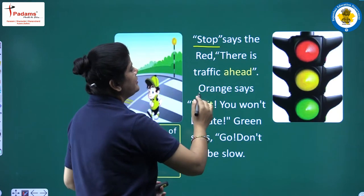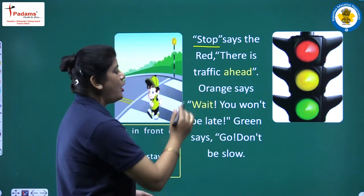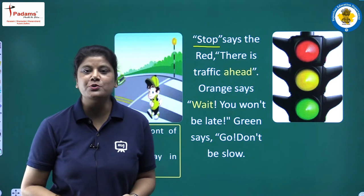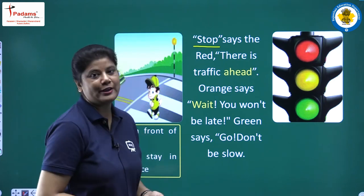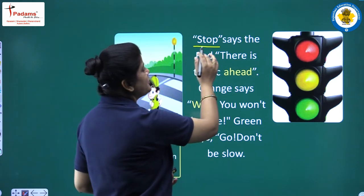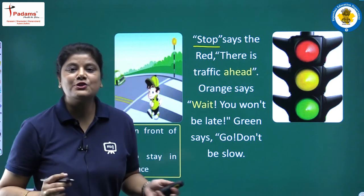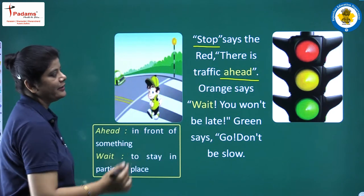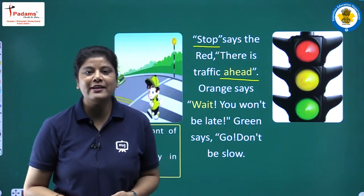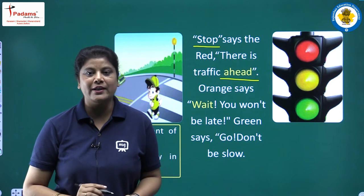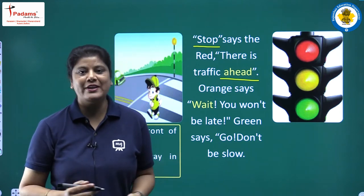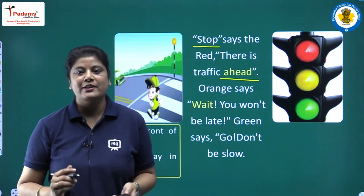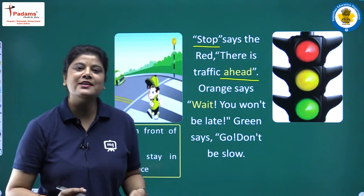Stop, says the red. There is traffic ahead. Red light says stop. Ahead means in front of something. Red light हमें indicate करती है कि stop — मतलब हमें वहाँ पे रुकना है। क्यों रुकना है? क्योंकि आगे traffic है, काफी सारे लोग vehicles लेके आ रहे हैं, तो हमें वहाँ पे रुकना है। तो red light indicates stop — there is traffic ahead.